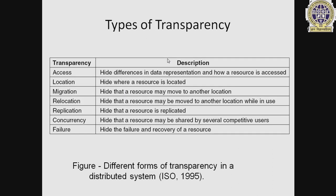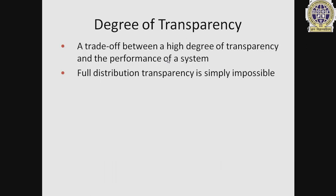Types of transparency: there are different types — access transparency, location transparency, modification transparency, relocation transparency, replication transparency, concurrency transparency, and failure transparency. Regarding the degree of transparency: there is a trade-off between a high degree of transparency and the performance of a system. Full distribution transparency is simply impossible.